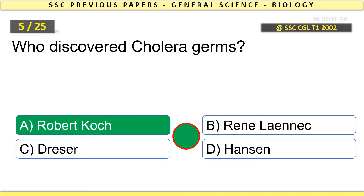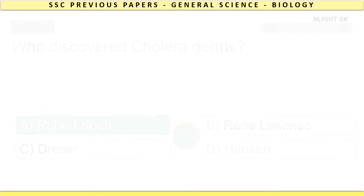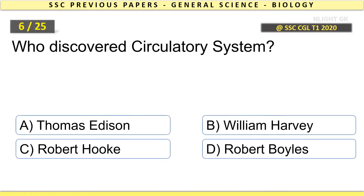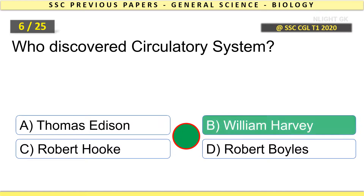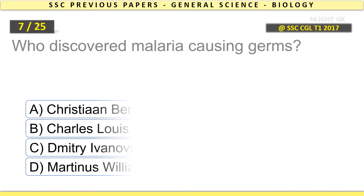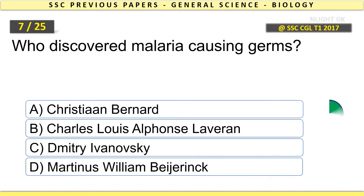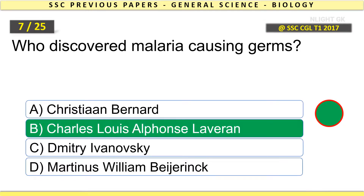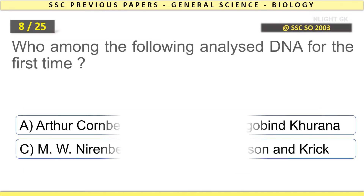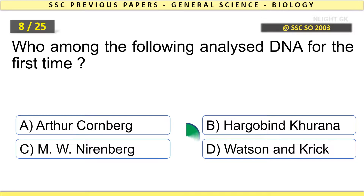Who discovered cholera germs? Robert Koch. Who discovered the circulatory system? William Harvey. Who discovered malaria-causing germs? Charles Louis Alphonse Laveran.